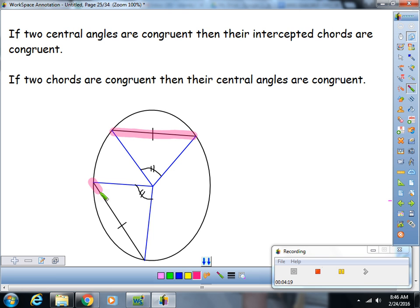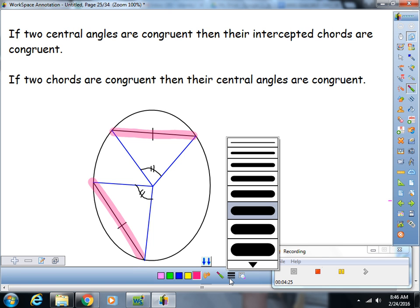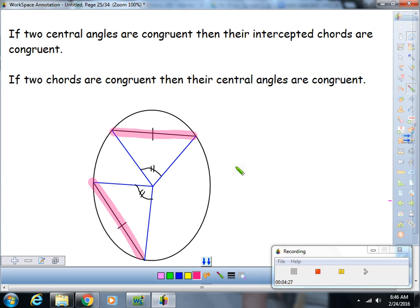So if you know that you have two chords congruent, then you also know that their central angles will be congruent.